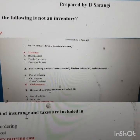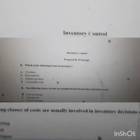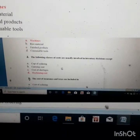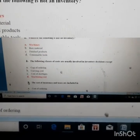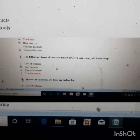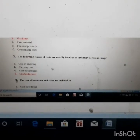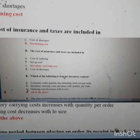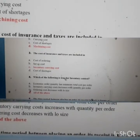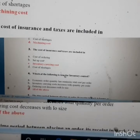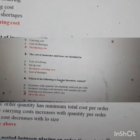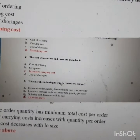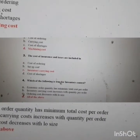The second question: which classes of cost are involved in inventory decisions except one? We generally use ordering cost, carrying cost, and cost of shortage to find the economic order quantity — we do NOT include machining cost. Third question: cost of insurance and taxes are included in inventory carrying cost, since any expenditure you make to carry your inventory — raw material, finished goods, etc. — comes under inventory carrying cost.